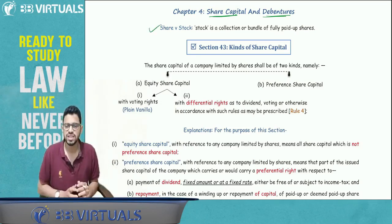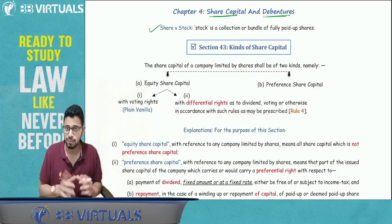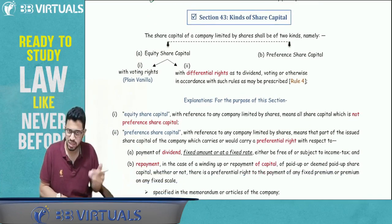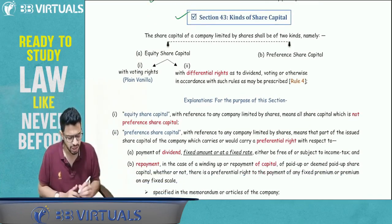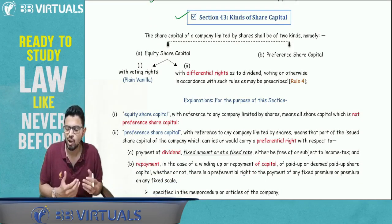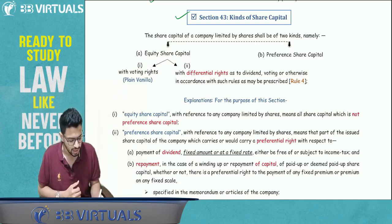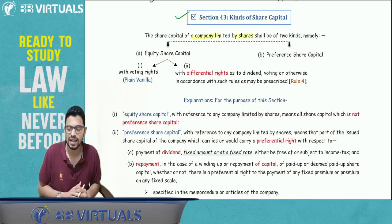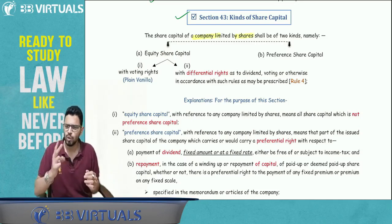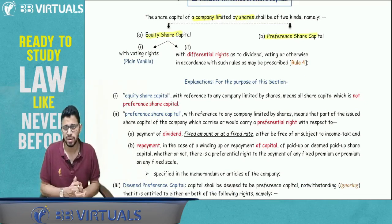There is a general differentiation between share and stock. Stock is a collection of fully paid-up shares — not partly paid-up, but fully paid-up shares. We will discuss this more later. Let's start with Section 43: Kinds of Share Capital. This is relevant to a company limited by shares, not a company limited by guarantee. There are two types of share capital: equity share capital and preference share capital.